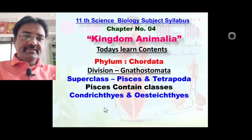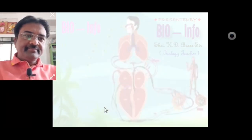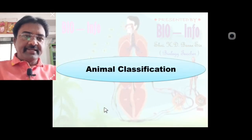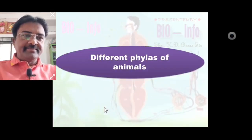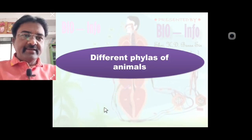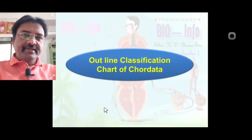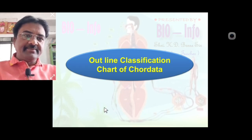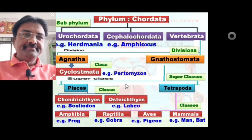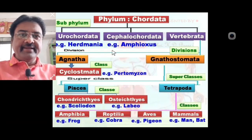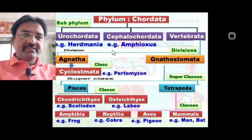Today's first concept: animal classification contains different phyla of animals. You know there are total 11 different phyla. Chordata is one of the major phyla. We learned in the previous lecture the outline classification of Chordata. Chordata is divided into three sub-phyla: Urochordata, Cephalochordata, and Vertebrata.